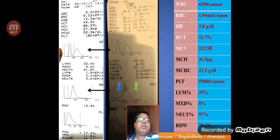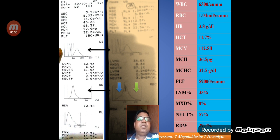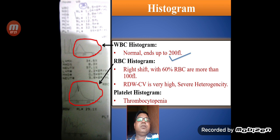In case number two, the RBC histogram is widened. The MCV of this patient is 112.5 femtolitres and the RDW is around 29.1%. However, analyzing the WBC histogram, we can see the curve ends around 200 femtolitres. When the WBC curve ends around 200 to 250 femtolitres, we can say this is a case of hemolytic anemia. The WBC curve is normal, ending at around 200 femtolitres, while the RBC histogram is totally shifted towards the right with high RDW-CV.